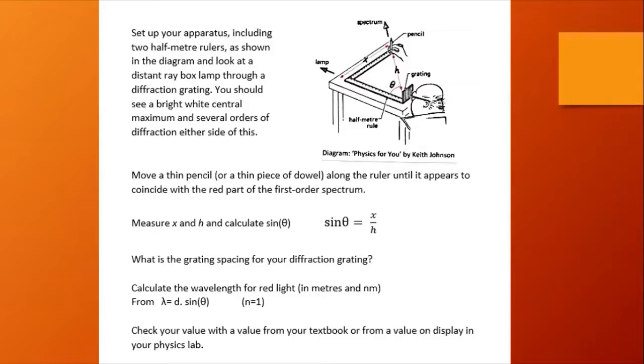Now this leads us on to an experiment to determine the wavelength of visible light using a diffraction grating. This is quite a simple setup. We have two half-meter rulers, we have you looking through the diffraction grating at a distant ray box, and we've got two half-meter rulers lined up as you can see on the lab bench.